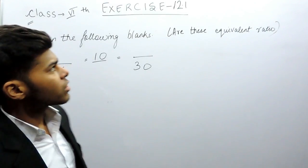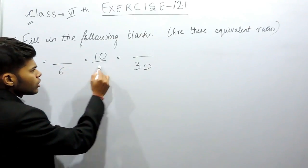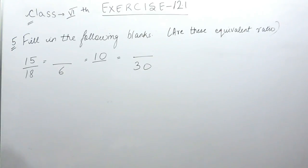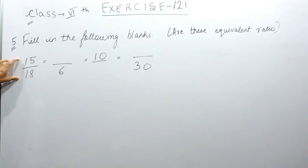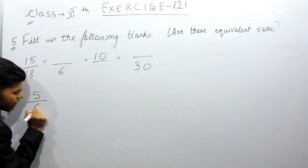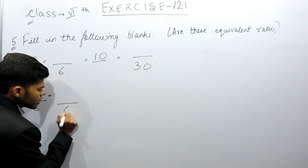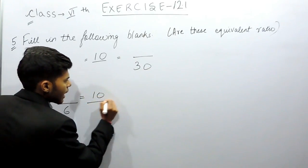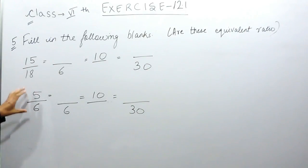Hello everyone, this is the fifth question of Exercise 12.1. In this question we have to fill the blanks — blank one, two, and three — and later we have to tell whether these ratios are equivalent or not. First of all, as you can see, it is not in its simplest form. We'll convert it: three-five times and three-six times, that means it is five by six equals to dash dash dash.